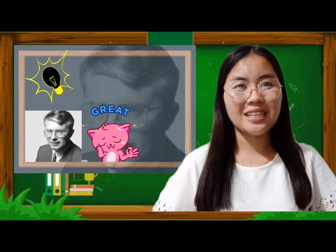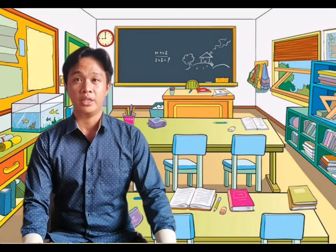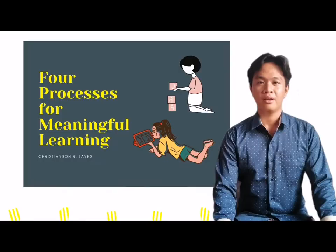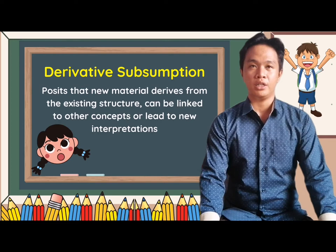In utilizing Ausubel's Subsumption Theory, it is important to know the four processes for meaningful learning. Meaningful learning takes place when an idea to be learned is related in some sensible way to ideas that the learner already possesses. Ausubel believed that before new material can be presented effectively, the student's cognitive structure should be strengthened. There are four processes for meaningful learning. First on the list is derivative subsumption.